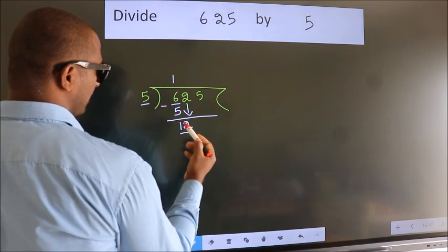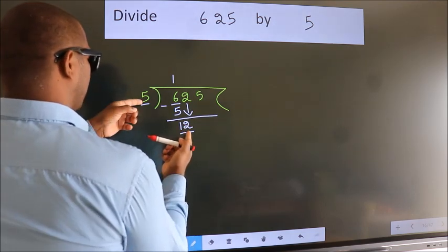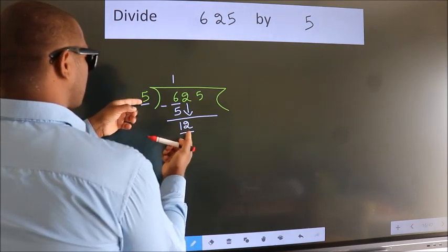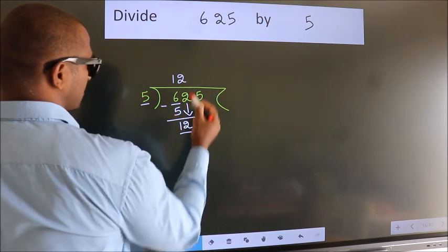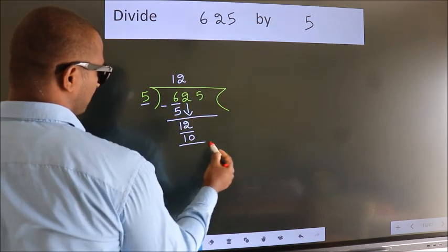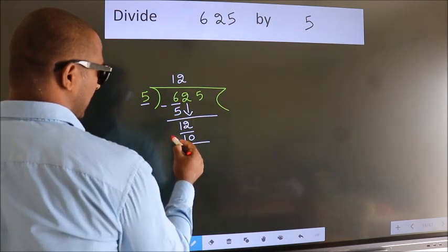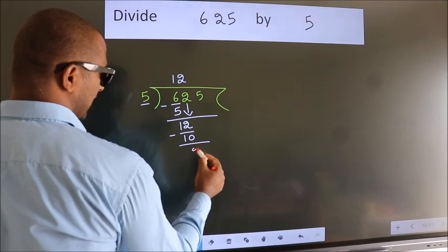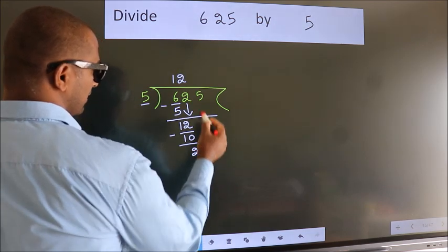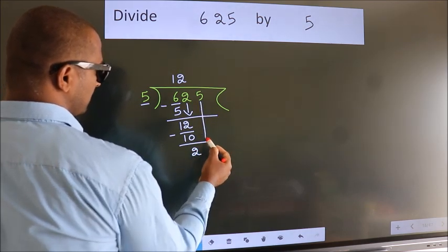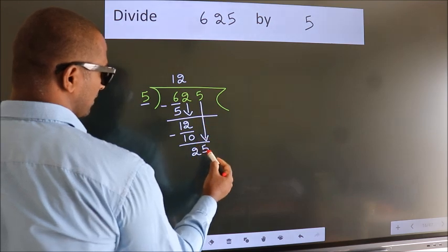So we have 12. A number close to 12 in the 5 times table is 5 twos — 10. Now we subtract. We get 2. After this, bring down the beside number. So 5 comes down.